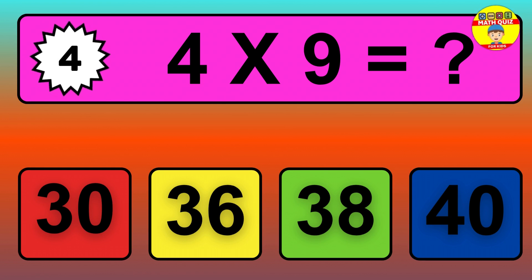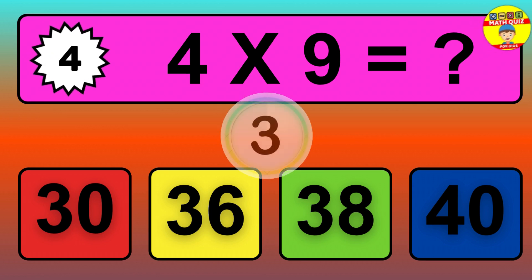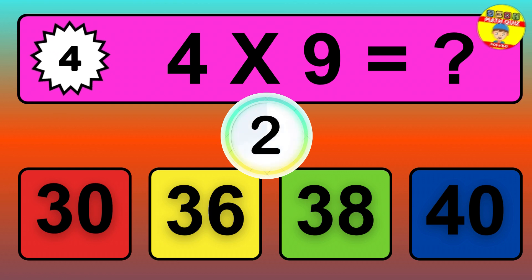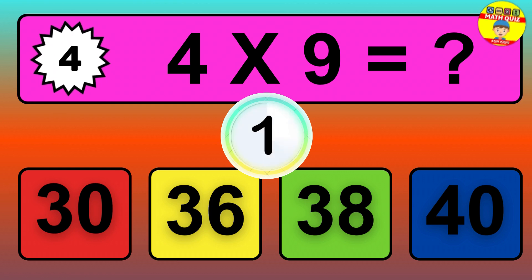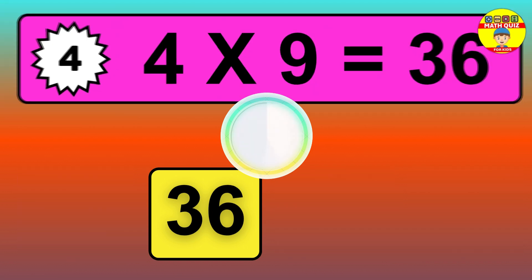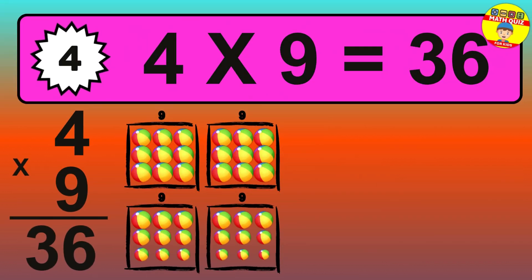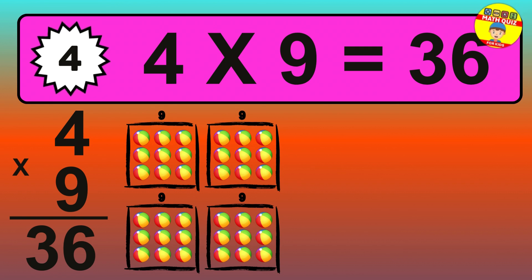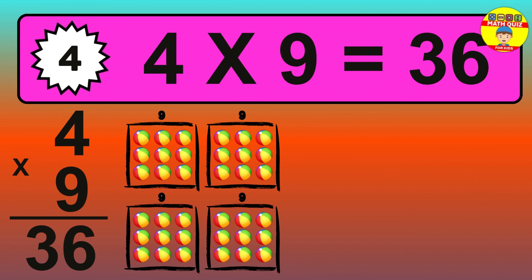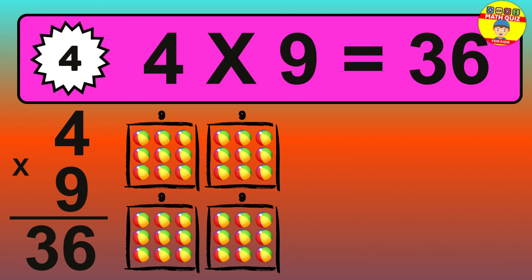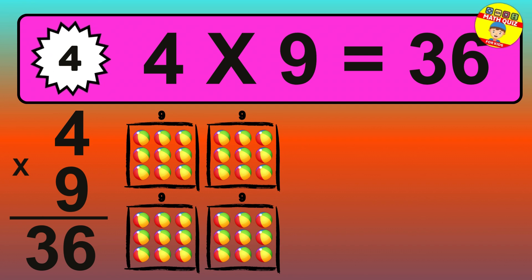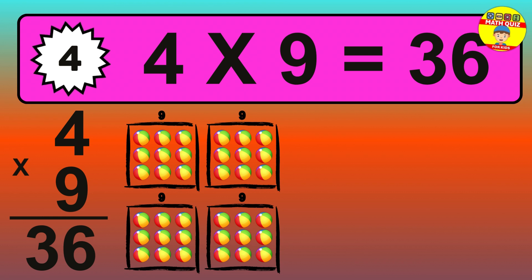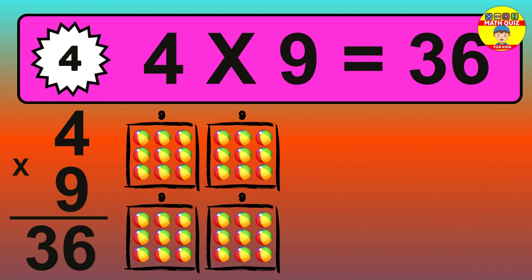Question 4. 4 times 9 equals what? The answer is 4 times 9 is 36. To calculate, we have 4 groups with 9 balls each one. So, how many balls do we have? 36 balls.